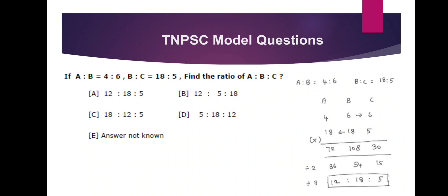Second, B is to C: 18 is to 5, so B is to 18 and C is to 5. Now A is to B, and B is to 6. We fill in all the numbers.